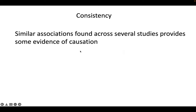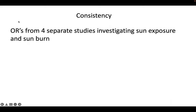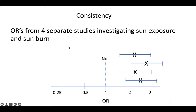Consistency is also a good one. That's when similar associations are found across several studies. Here I have four hypothetical odds ratios from four separate studies investigating sun exposure and sunburn. Although there's some variability in the results, they're all around 2.5. The fact that multiple studies taking these measures on different populations, with different sample sizes, at different times, in different geographic regions, all find similar results provides really good support that these two things are related — and we're getting closer to causality if we have both strength and consistency met.